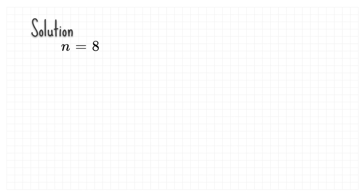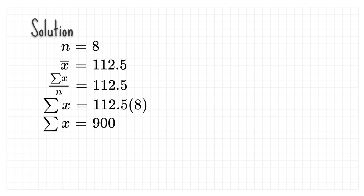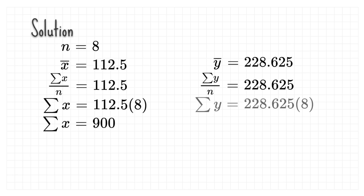From the given information we are lacking the summation of x and summation of y. We find the summation of x using the given mean of x. We know that the mean of x is the summation of x divided by n, which equals 112.5. Cross-multiplying by 8, our summation of x is 900. Repeating the same step, the summation of y is 1829.